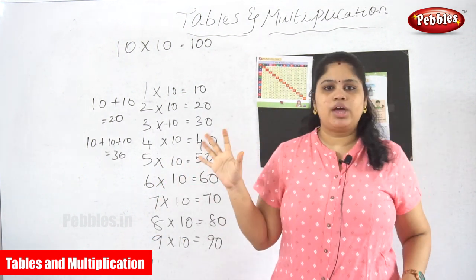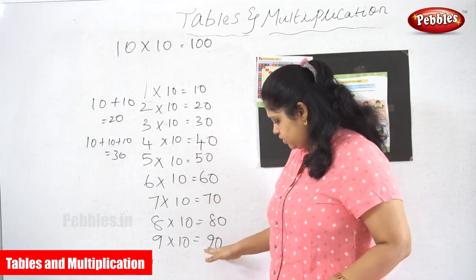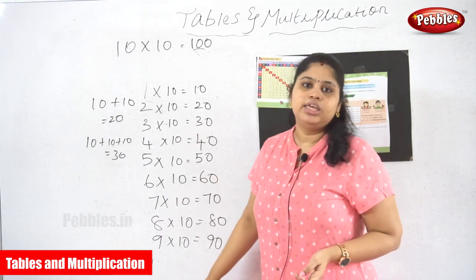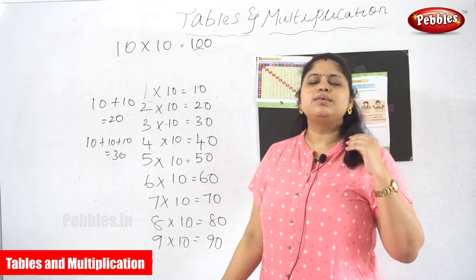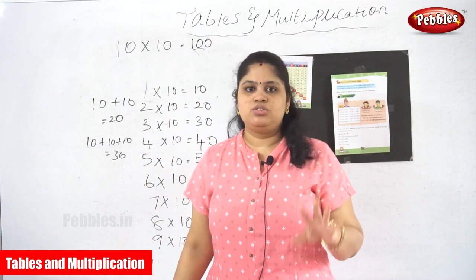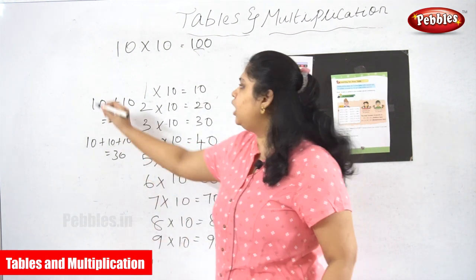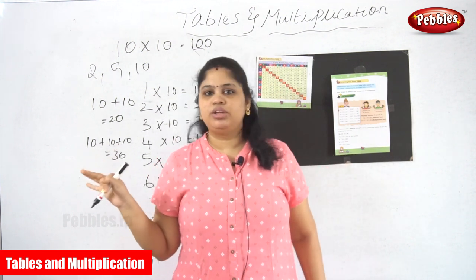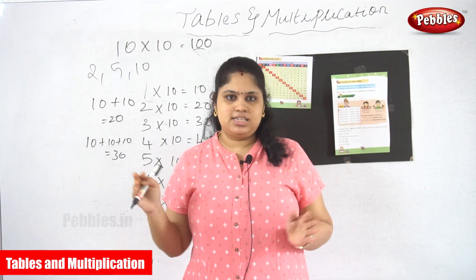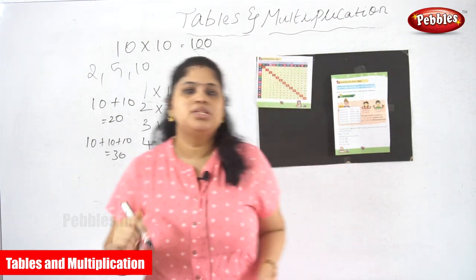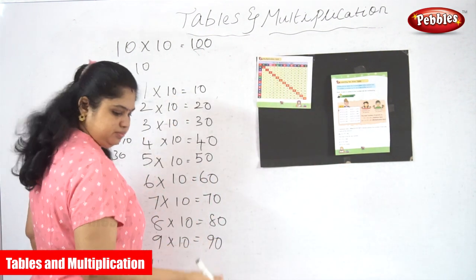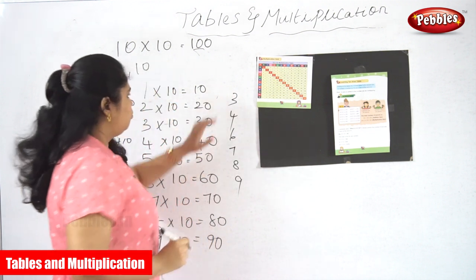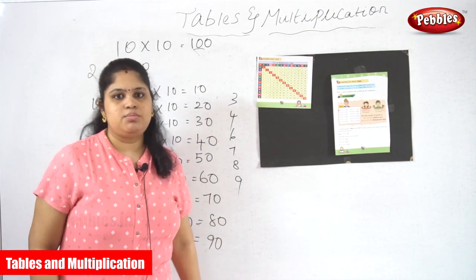For the 10th table, you can simply close your eyes and write 1, 2, 3, 4, 5, 6, 7, 8, 9, 10, then add a zero to the end of each number. This is the simplest table. From 1 to 10, we have now completed 3 tables: the 2 tables, 5 tables, and 10 tables. We still have 6 tables remaining to learn: 3, 4, 6, 7, 8, and 9.